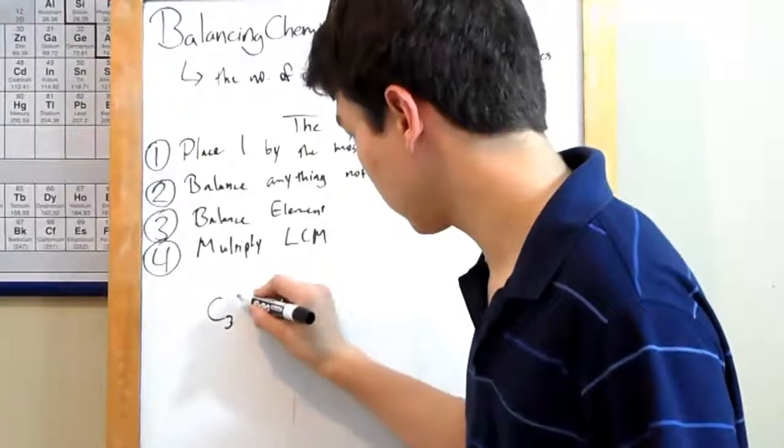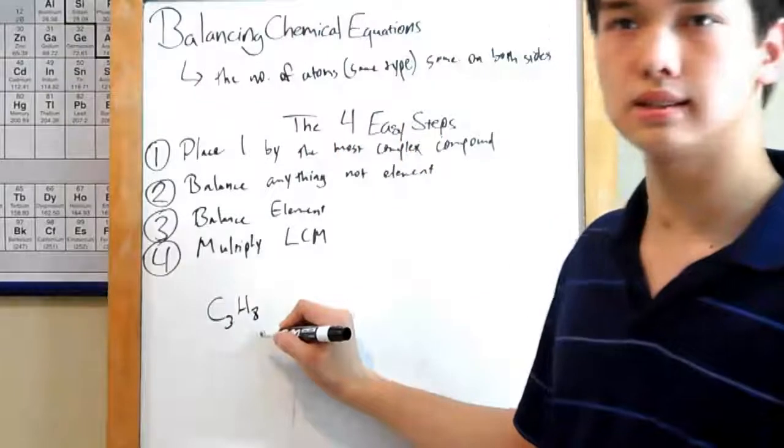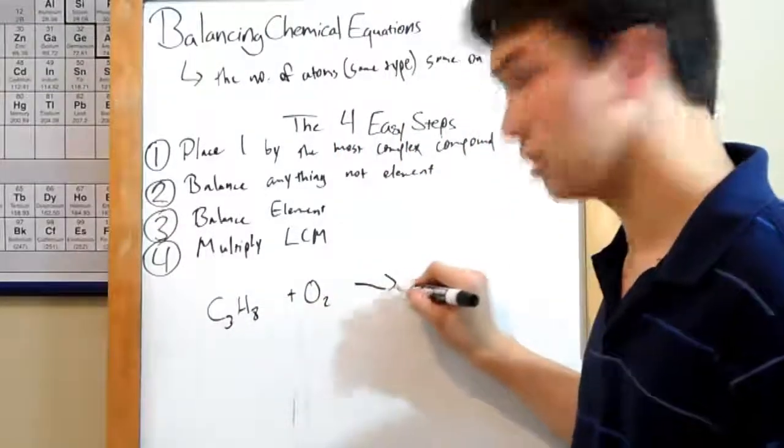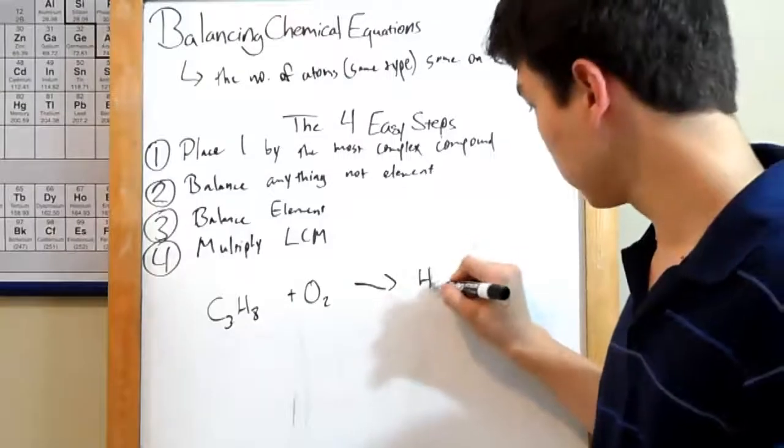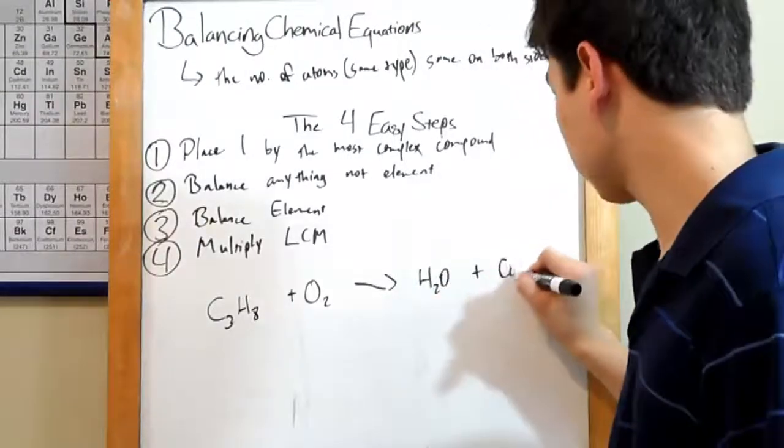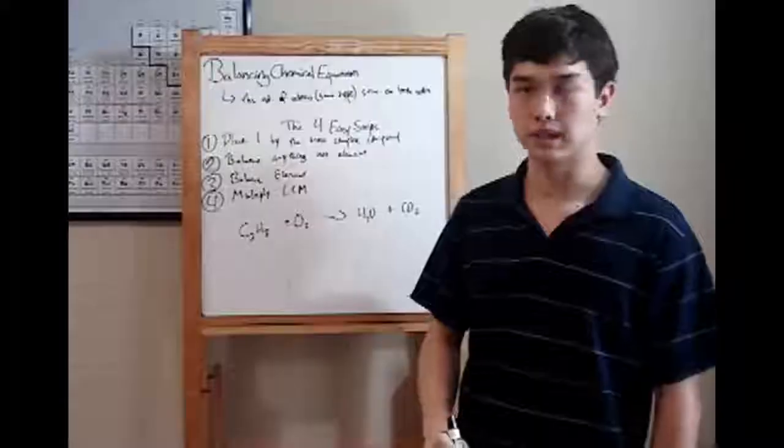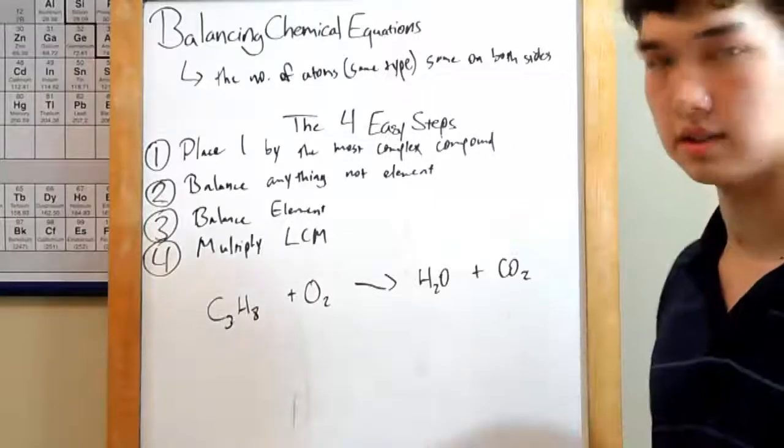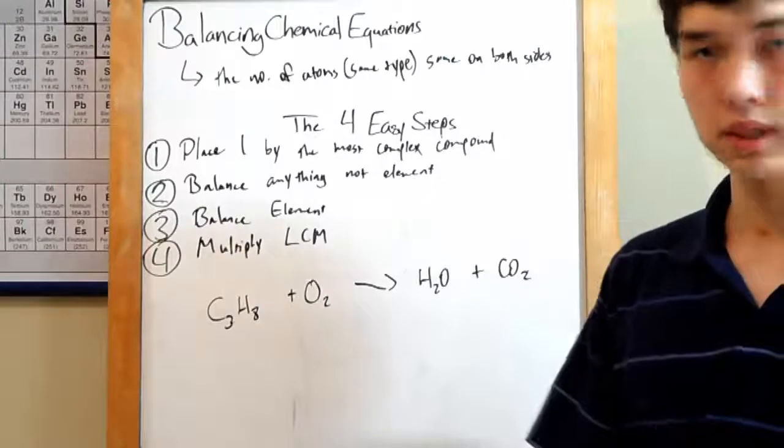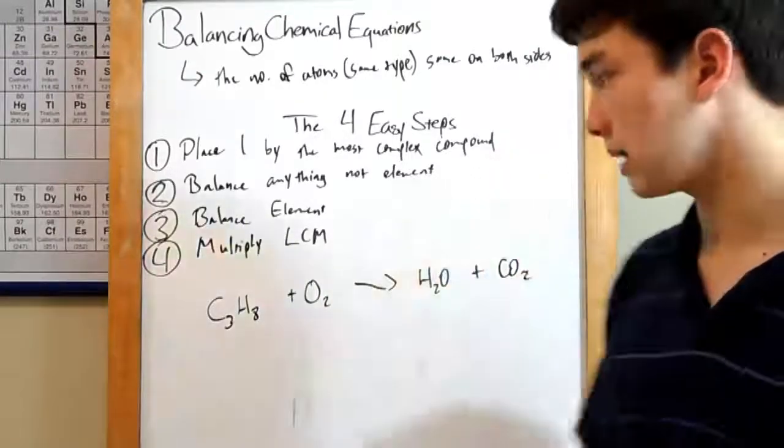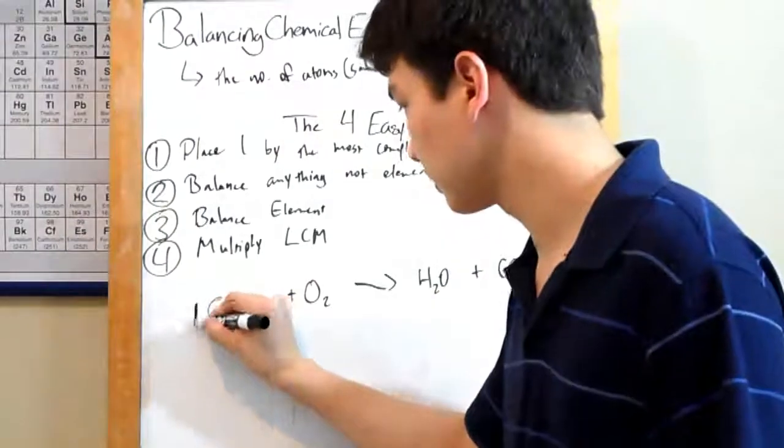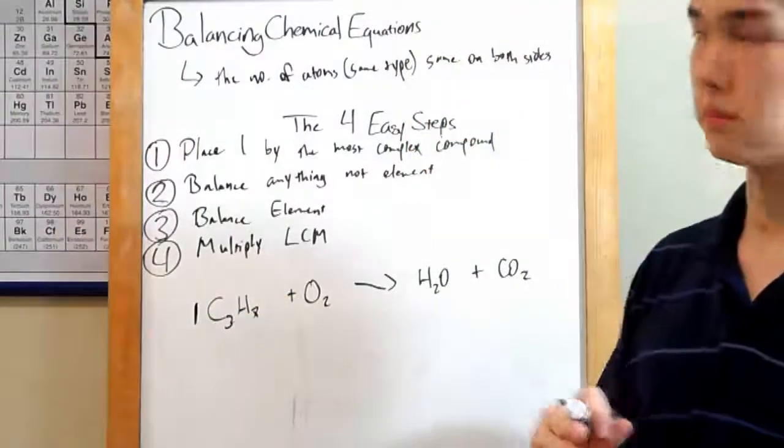Let's say we've got C3H8, and this is combining with oxygen, to form water and carbon dioxide. Pretty standard equation. But it's unbalanced. We've got one, two, three oxygens over here, but only two over here. Let's get going. Rule one. One by the most complex compound. That's our C3H8 over here. There's our one. Moving on.